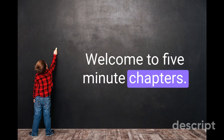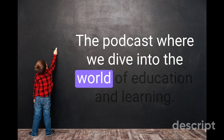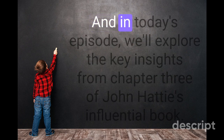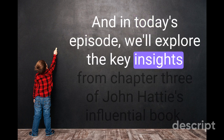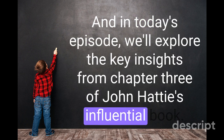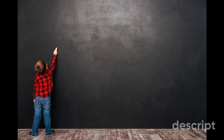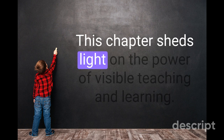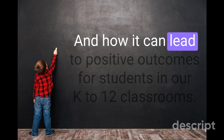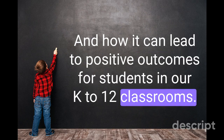Welcome to 5-Minute Chapters, the podcast where we dive into the world of education and learning. I'm your host, Daniel Bowe, and in today's episode, we'll explore the key insights from Chapter 3 of John Hattie's influential book, Visible Learning, from 2008. This chapter sheds light on the power of visible teaching and learning, and how it can lead to positive outcomes for students in our K-12 classrooms.